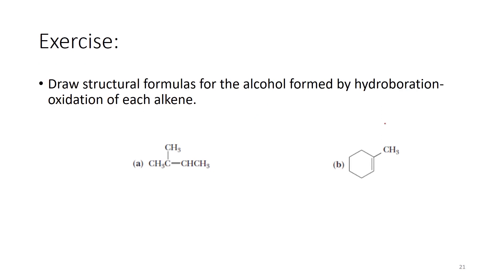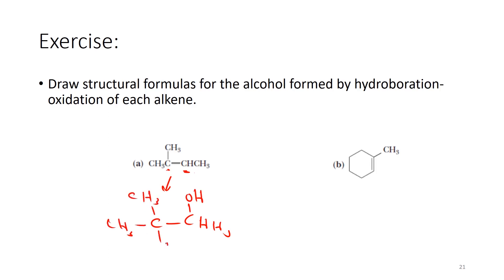Now let's look at this exercise: draw a structural formula for the alcohol formed by the hydroboration-oxidation of each alkene. During the exam, you simply need to remember that hydroboration is an anti-Markovnikov reaction, which means the addition of the hydroxyl group goes to the carbon carrying the largest number of hydrogens, not the one with the fewest. So I have the carbon with fewest hydrogens on one side, and the carbon with the largest number of hydrogens on the other — I add the hydroxyl to that side and hydrogen to the other.